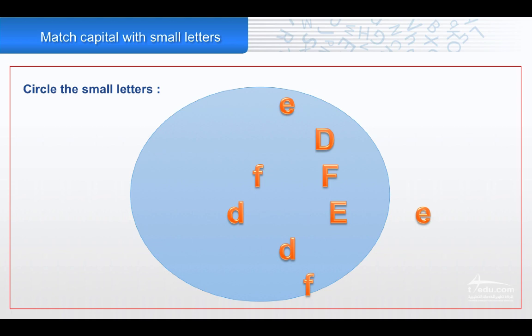Now we have to circle the small letters. We have here small letters and we have capital letters. We should make a circle with small letters.